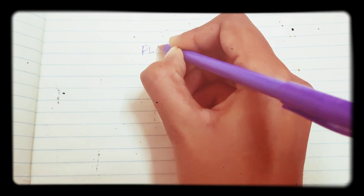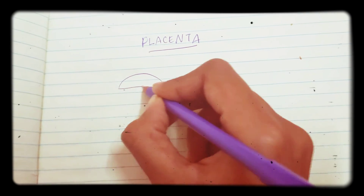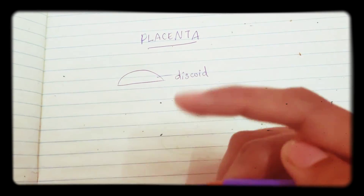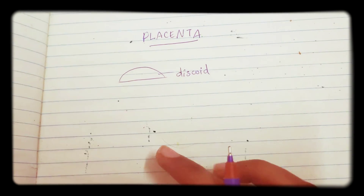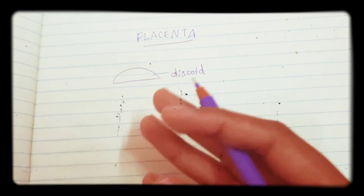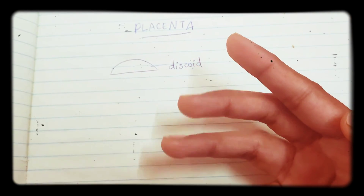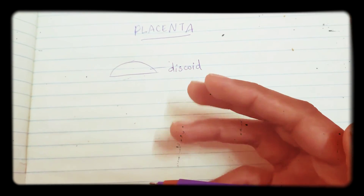In this video we are going to discuss about placenta. If we draw a placenta, you can see it's discoid in shape. It is hemochorial, meaning it is in connection with the maternal blood vessels. It is also decidual, meaning after delivery it will get discharged out. So these are the three main features of placenta: discoid in shape, hemochorial, and decidual.